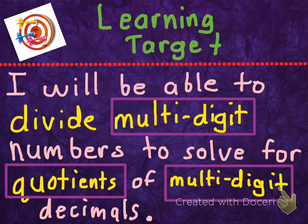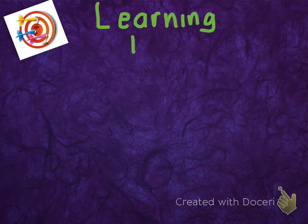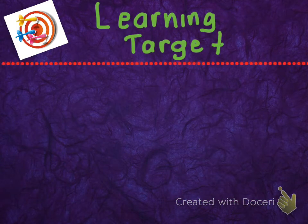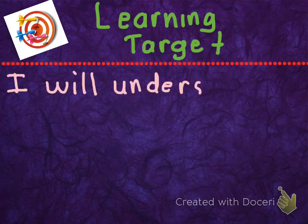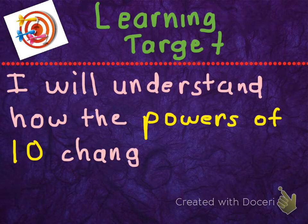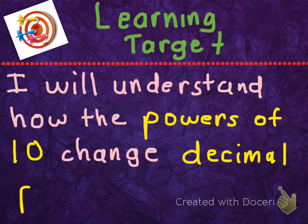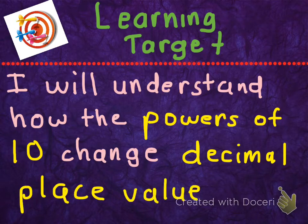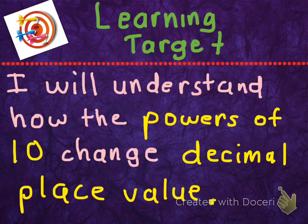Good. My second learning target is: I will understand how powers of 10 — that's when we multiply and divide by 10 — change decimal place value. So the powers of 10 is when we multiply and divide numbers by 10, and how that affects decimal place value.